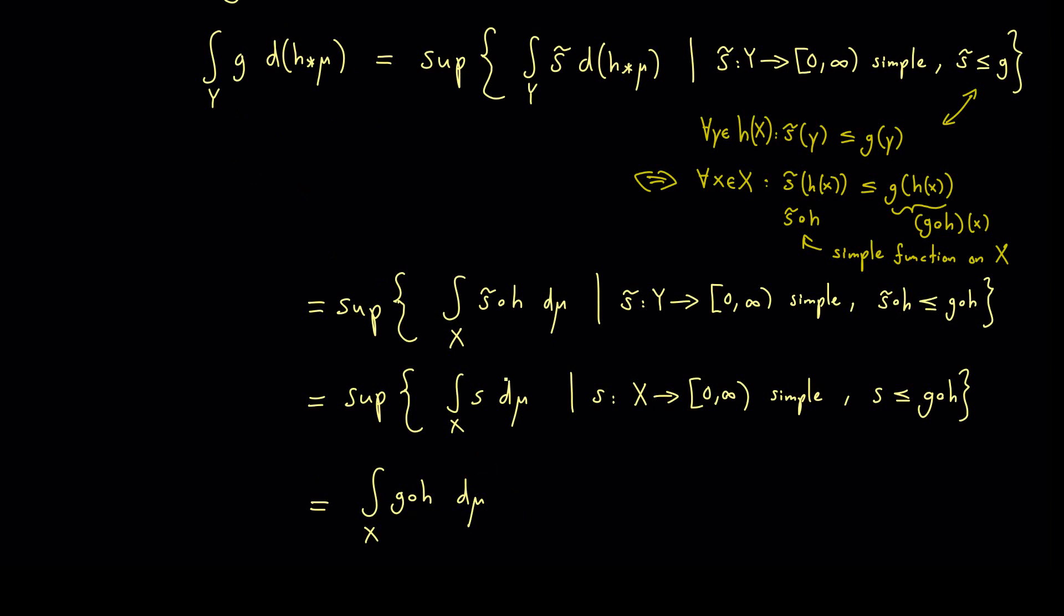What you also see is if you have an arbitrary measurable function g then you can split it up into a positive and a negative part and then use the substitution rule here for both parts. And then we have our result if one integral exists also the other one exists. Okay, I think that's good enough for today. I hope that helped you a little bit. And then see you next time. Bye.